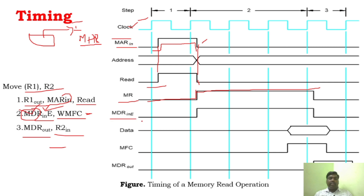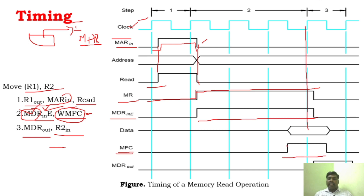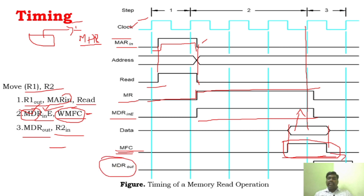The processor will wait until it receives the MFC signal - that is, until the read operation completes. You can see in the diagram that MFC is received only at a specific clock cycle - in between, the processor waits. Only at that particular cycle when MFC is received will the data be saved in the MDR. At the very next clock cycle, MDR out is enabled - meaning the data in MDR is sent to R2.